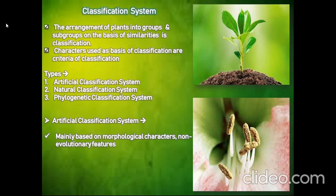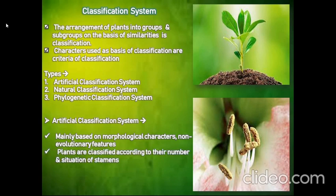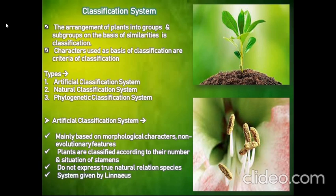It is mainly based on morphological characters and non-evolutionary features. The plants are classified according to the number and situation of stamens. It does not express true natural relation between species. This system of classification was given by Carolus Linnaeus, the father of taxonomy.